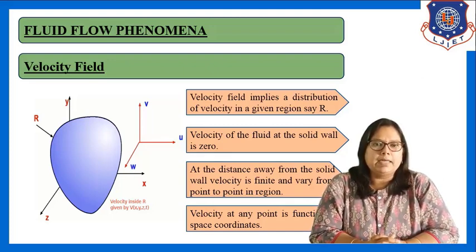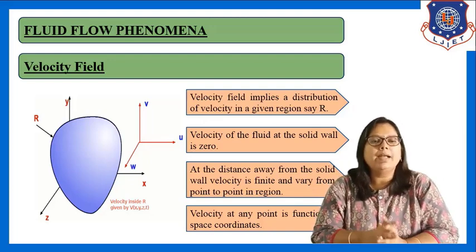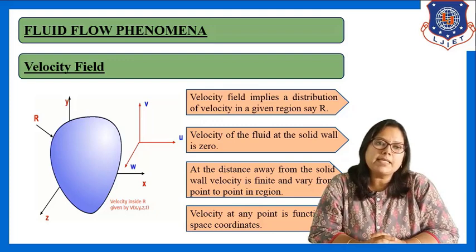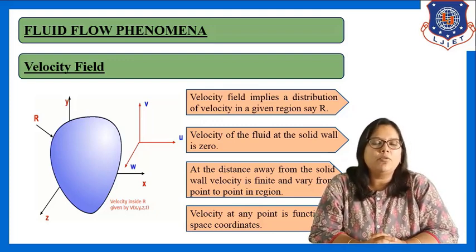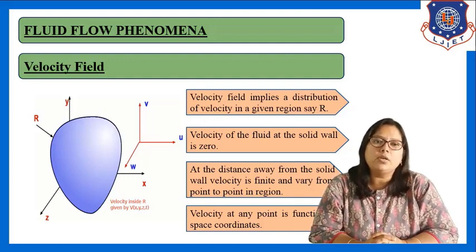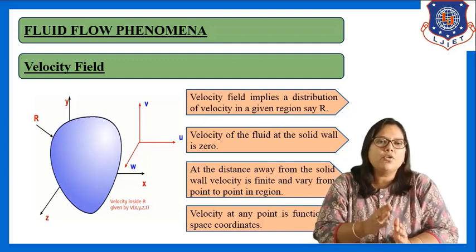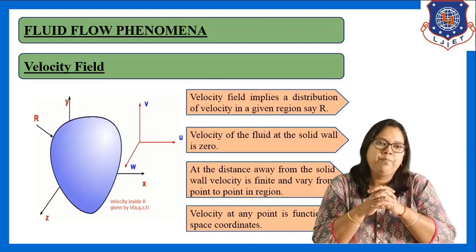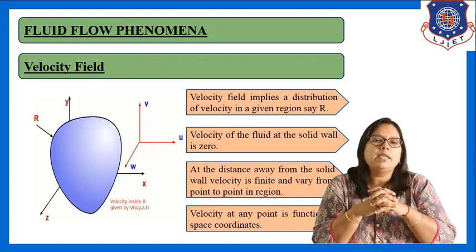Remember that velocity of the fluid at the solid wall is always zero, and as we go away from the solid wall it becomes finite. It is maximum at the center of the region. Velocity at the solid wall is always zero, increases as we go away, and is maximum at the center of the system. This is all about the velocity field.